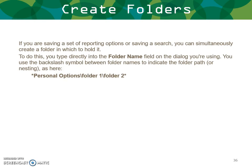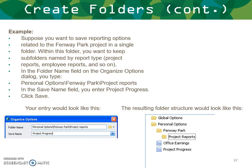When saving a set of reporting options or saving a search, you can simultaneously create a folder to hold it by typing directly in the folder name field. Use a backslash between folder names to indicate the path or nesting. For example, if you want to save reporting options for the Fenway Park project in a single folder with subfolders by report type — such as project reports and employee reports — you would type in the folder name field: 'Personal Options\Fenway Project\Project Reports', enter the save name as 'Project Progress', and click Save. The resulting folder structure would look like that.